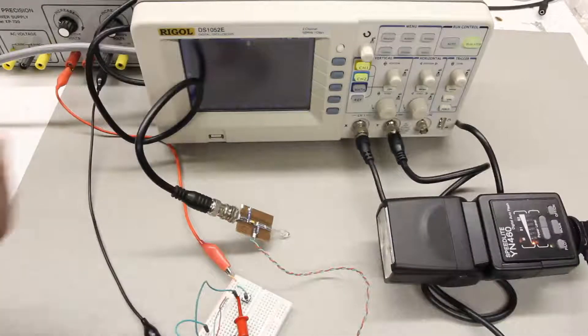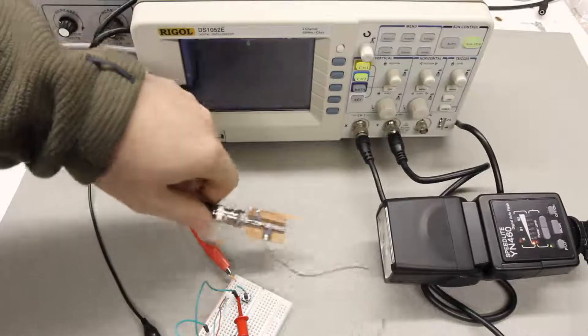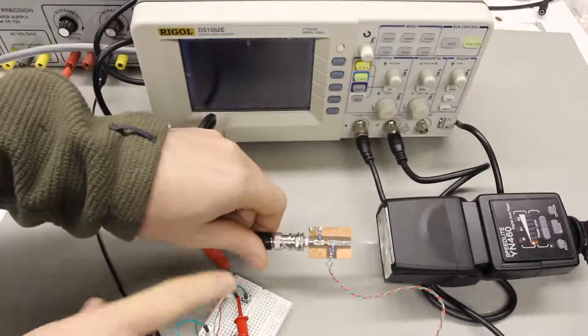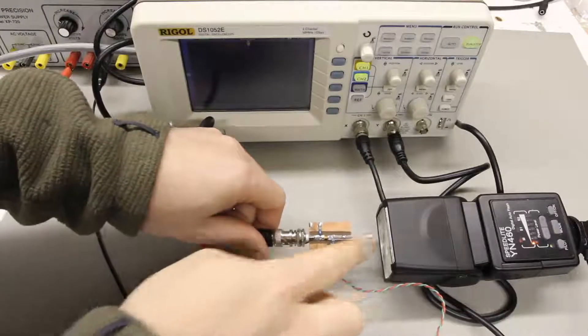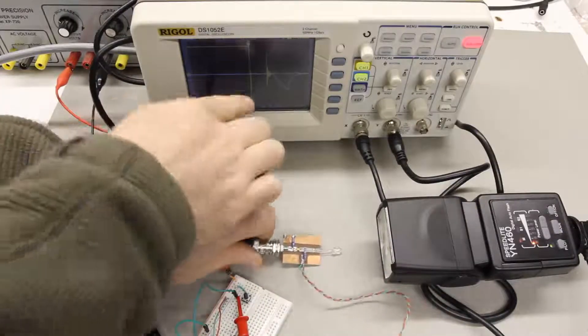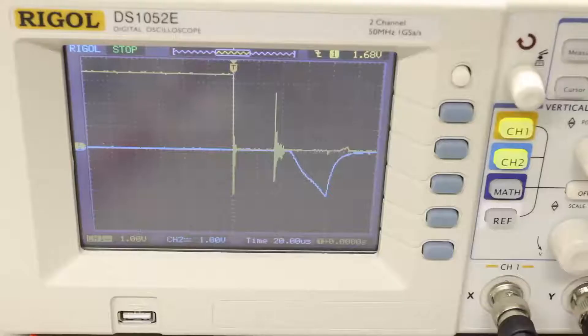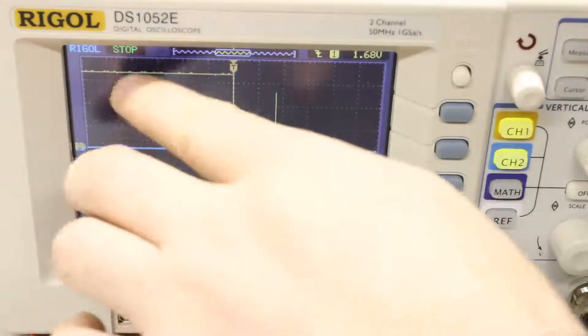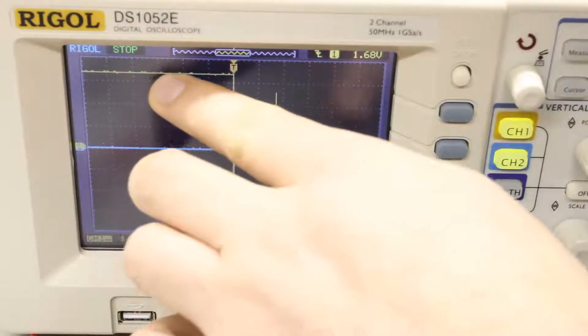Okay, so now we're ready to take a measurement. All we have to do is point the light sensor at the flash, hit this button, the flash is triggered, and we get this graph.